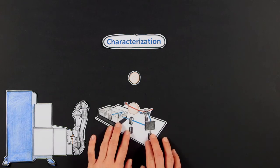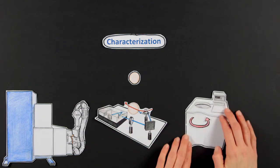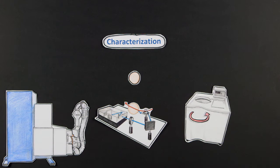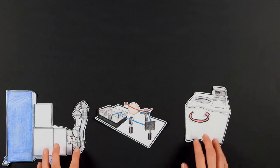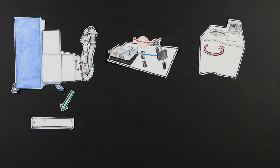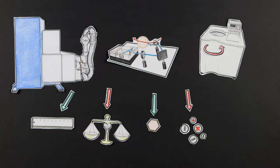Producing defined particles is only one topic which researchers study at FPS. Only rigorous characterization can ensure that the desired particle structure and conformation has been achieved. Various instruments are used to measure size, mass, shape, charge, or surface structure of the particles.